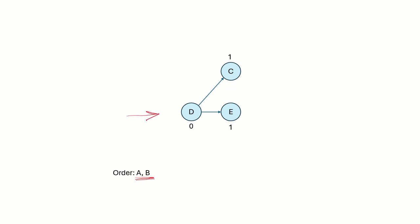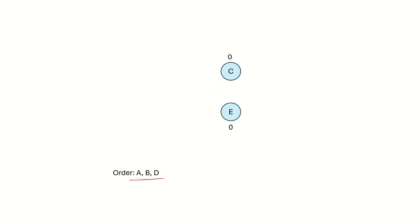We recompute the in-degree and see that D now has an in-degree of 0, so the next vertex in our ordering is D. We choose D and mark its outgoing edges to be removed. D is added to the ordering and vertex D along with its outgoing edges are removed from the graph.